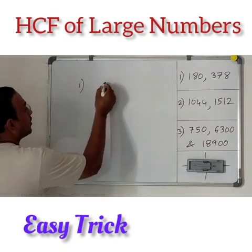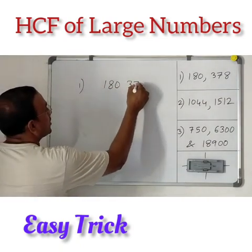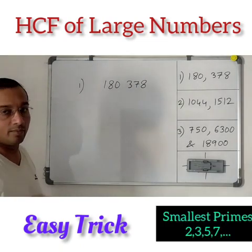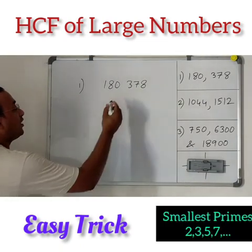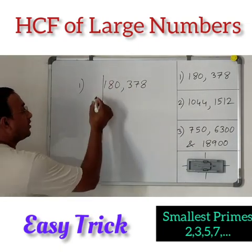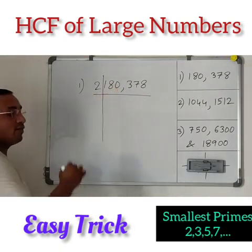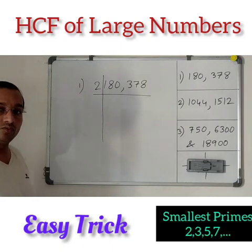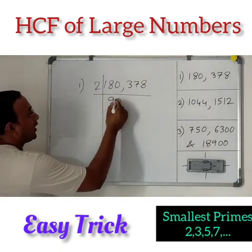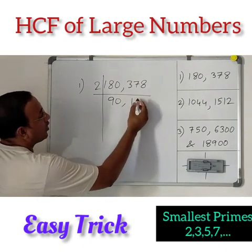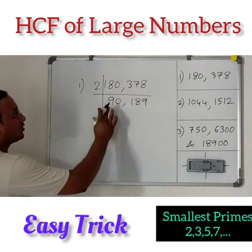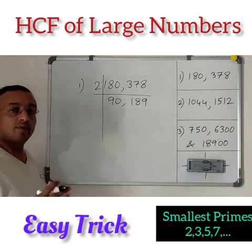So let's take 180 and 378. We are going to find the HCF of this using the smallest prime numbers. Take the smallest prime which divides both. What is the common factor we have? Both are even, so the smallest prime we can divide with is 2.